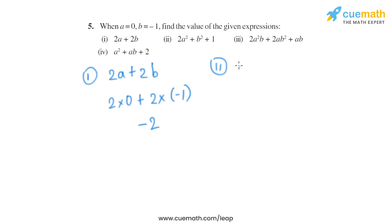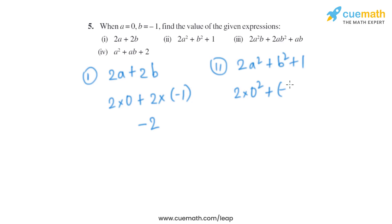Moving on to the second part, the expression given is 2a² + b² + 1. Since a is 0, it becomes 2 into 0², plus b is minus 1, so minus 1 squared plus 1. Now 2 into 0² is 0, and minus 1 squared is minus 1 into minus 1, which is plus 1. So it is 0 + 1 + 1, which equals 2.